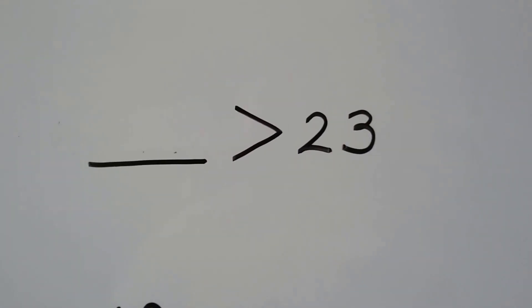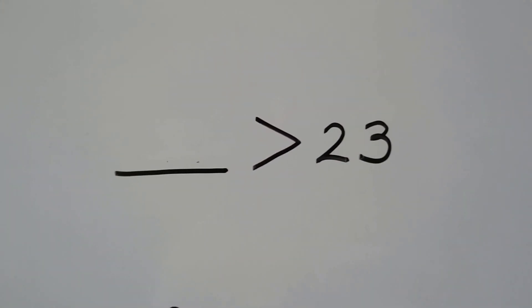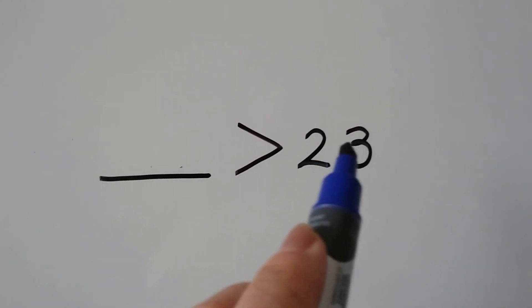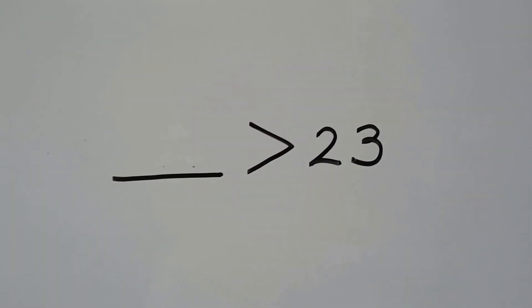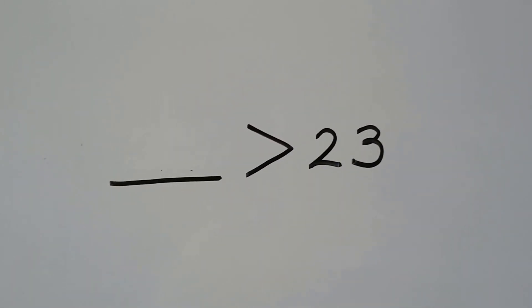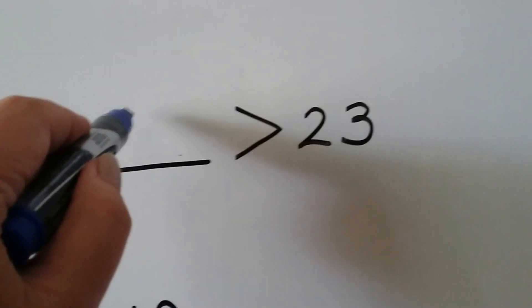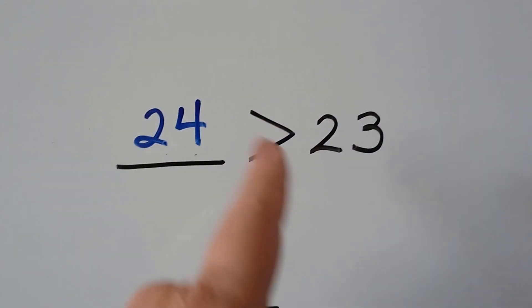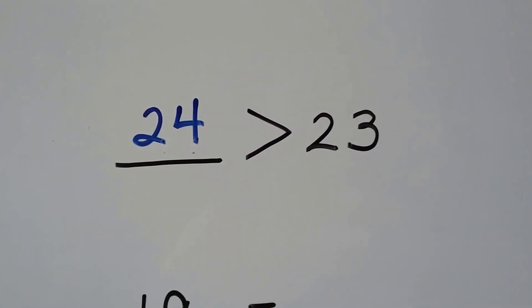Some number is greater than 23. If it has two tens, it's got to have more than three ones. Or it could have more tens and that would be greater. We could do 24 — that's greater than 23, that's one more than 23.